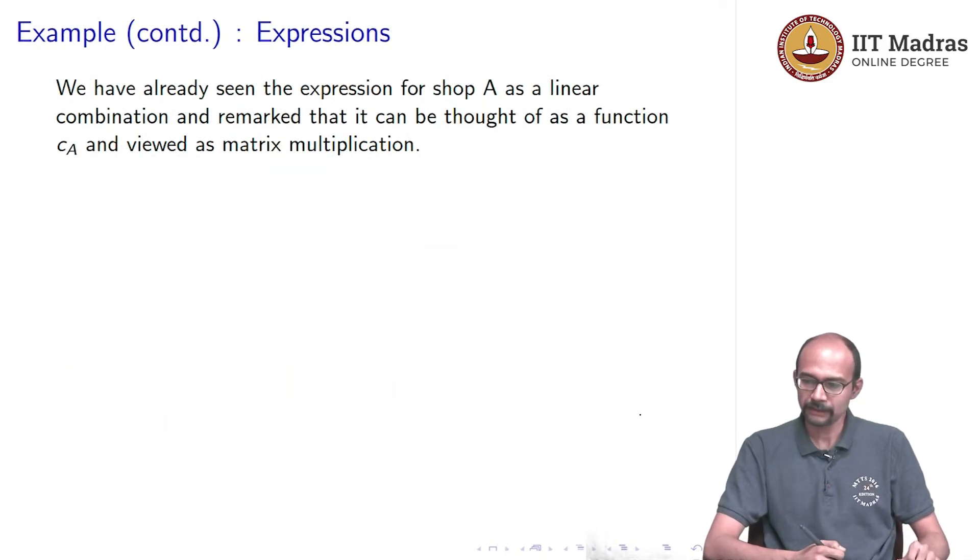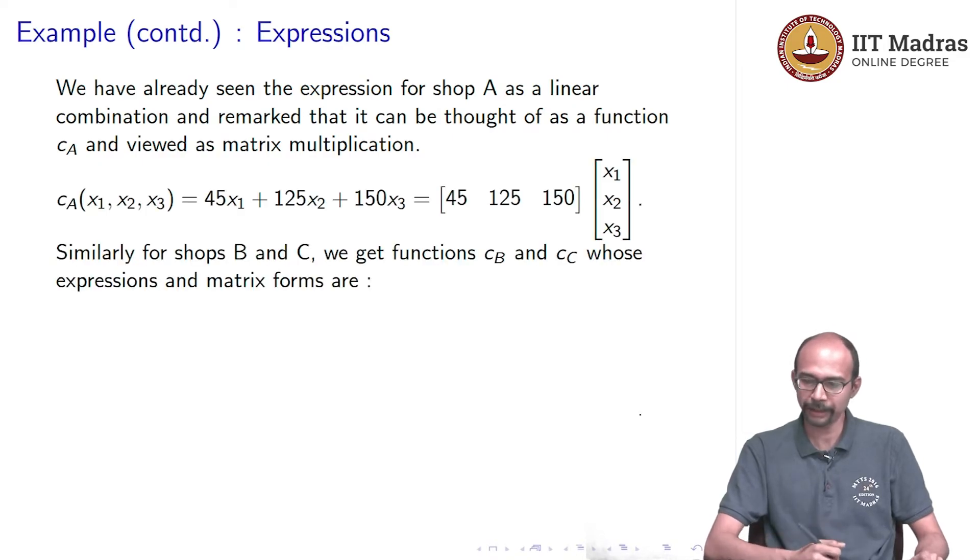We have seen already that the expression for shop A is a linear combination. And we can, in fact, view it as a function. That is what we saw a few slides ago. And we can also think of it as matrix multiplication. Just to remind you, we had this thing called CA which was the function, which was this linear combination 45x1 + 125x2 + 150x3, and which we can also write as a matrix multiplication.